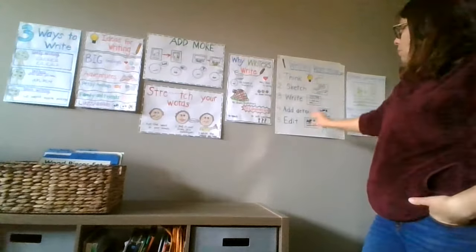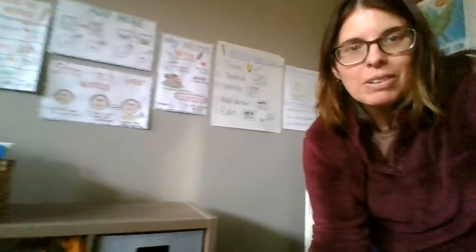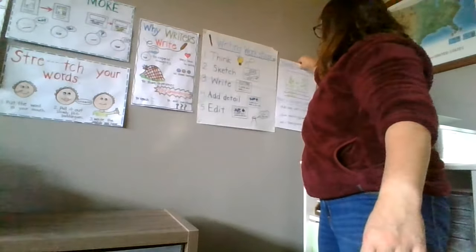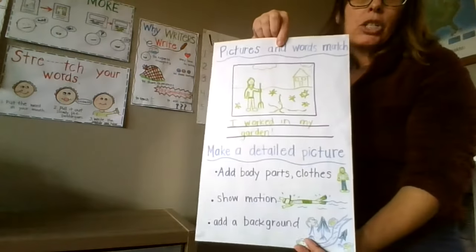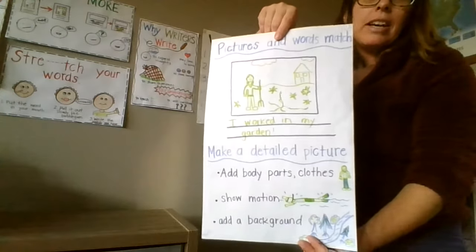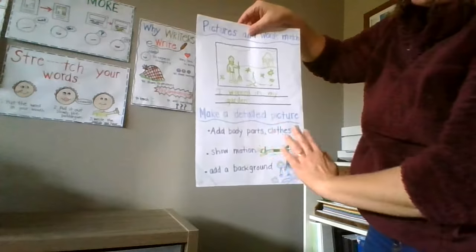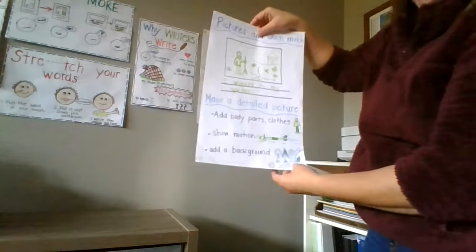We talked about the process for writing and let's talk about that one last because that's what you'll end up doing today. I'm going to move you a little bit closer. This one's really hard to see from over there but this is the last one we did and we talked about making sure our pictures and words match and to add details to our picture - clothes, body parts, motion lines, backgrounds.